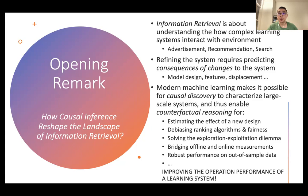Being causal is, in some sense, a much stronger statement than being associated, and we wish to leverage that knowledge to conduct effective counterfactual reasoning — for purposes such as estimating the effect of a new design, debiasing our ranking algorithms, promoting fairness, and perhaps even the long-term engagement of our customers, for solving the exploration-exploitation dilemma, which is extremely important for information retrieval recommender systems, and for bridging the offline and online measurements, as we often observe various types of gaps, and even for the robust performance on out-of-sample data, because the daily production scenarios we work with involve a lot of out-of-sample data. All of this contributes to improving the operational performance of our learning system.